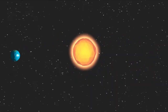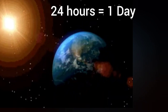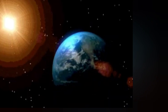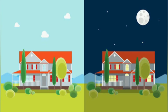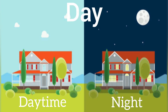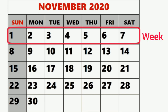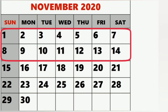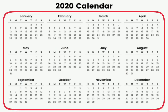We know that our earth revolves around the sun. The earth takes 24 hours to complete one rotation around its own axis. These 24 hours are approximately divided into 12 hours of daytime and 12 hours of night. Daytime and night together make a day. Seven days from Monday to Sunday make one week. Two weeks make a fortnight. Four weeks make a month. Twelve months make a year.